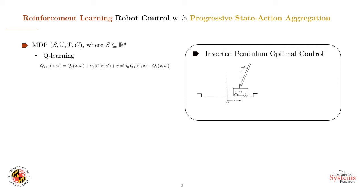We'd like to use Q-learning for a number of reasons, including its simplicity and convergence guarantees, but that's not always possible. Q-learning requires finite state and action spaces, and more often than not the state and action spaces are infinite vector spaces of finite dimensions.